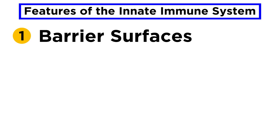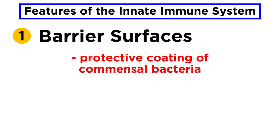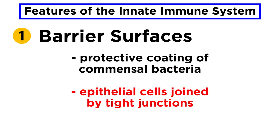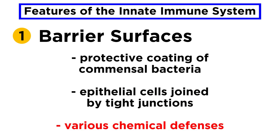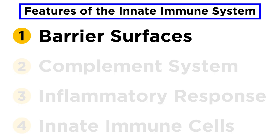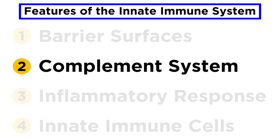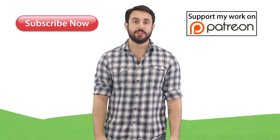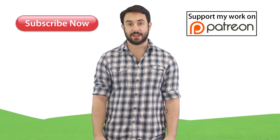So that covers the basics regarding barrier surfaces. To review, the most common features of all barrier surfaces include a protective coating of commensal bacteria, epithelial cells joined by tight junctions which make antimicrobial peptides, and an arsenal of different chemical defenses. And with barrier surfaces covered, it's time to move on to the complement system.